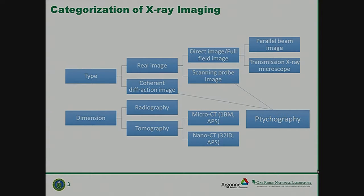For the real image part, we can divide it into two parts: the direct image, and the transmission x-ray microscope. From the dimension perspective, we can divide images into radiography, which is 2D, and tomography, which is 3D. In tomography, the focus of today, we have micro CT — like the 2BM beamline at APS — and nano CT — like 32ID at APS. If we combine coherent diffraction imaging and scanning probe imaging, we can get another imaging modality called ptychography.